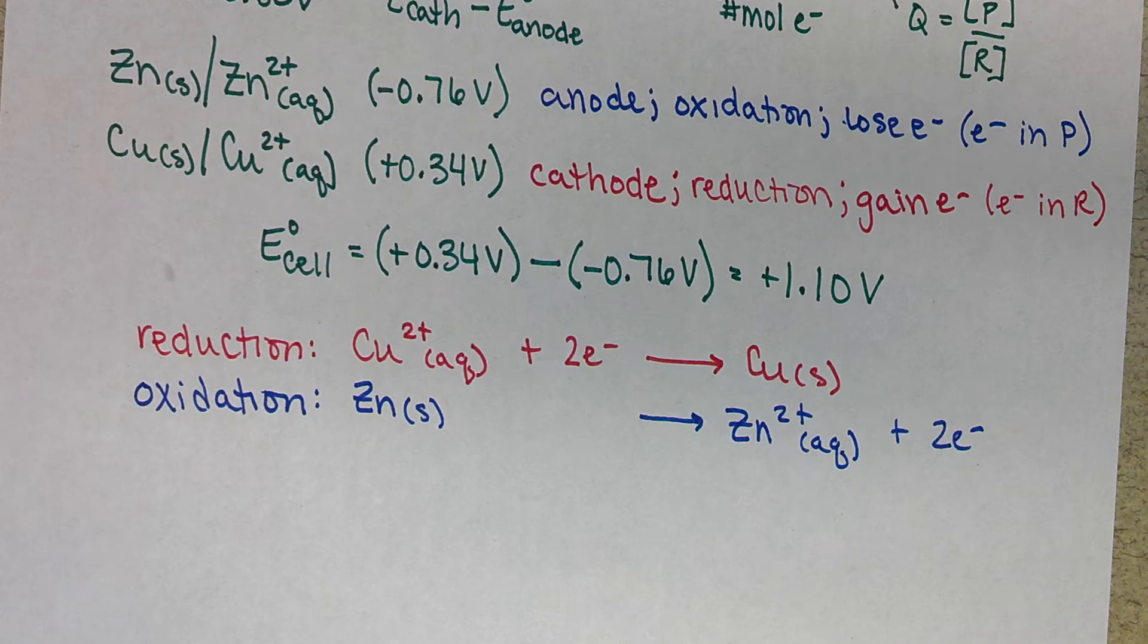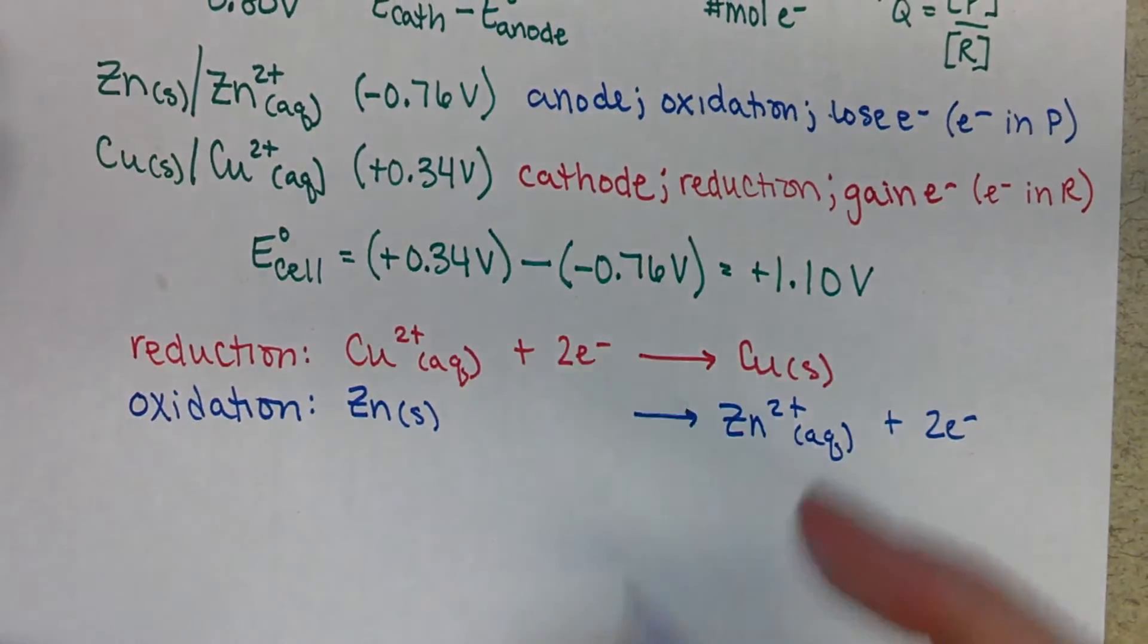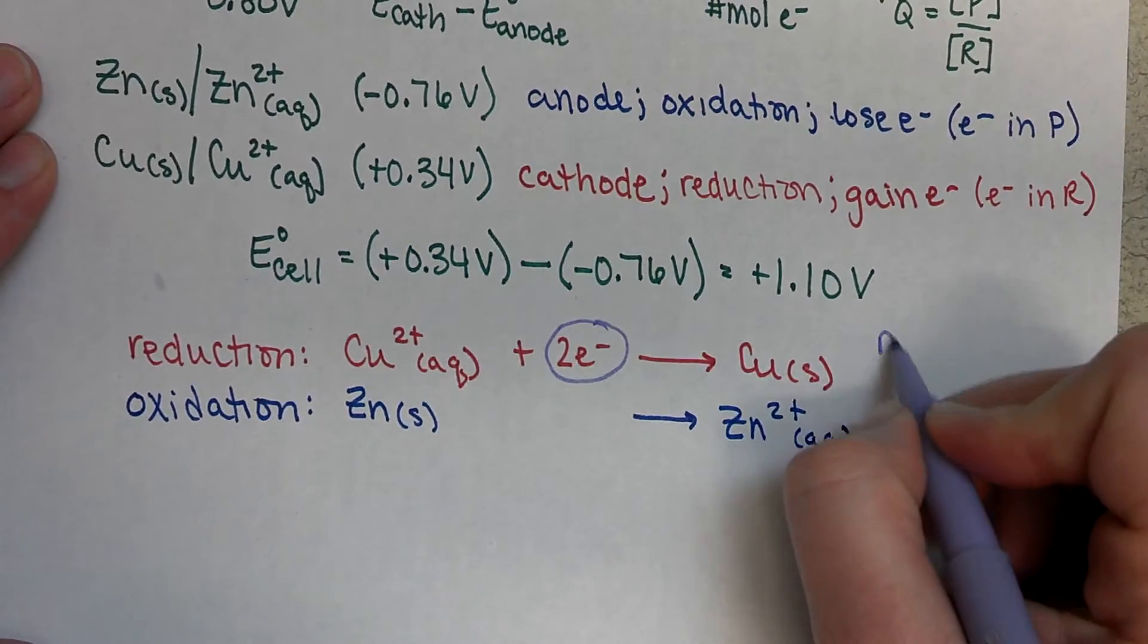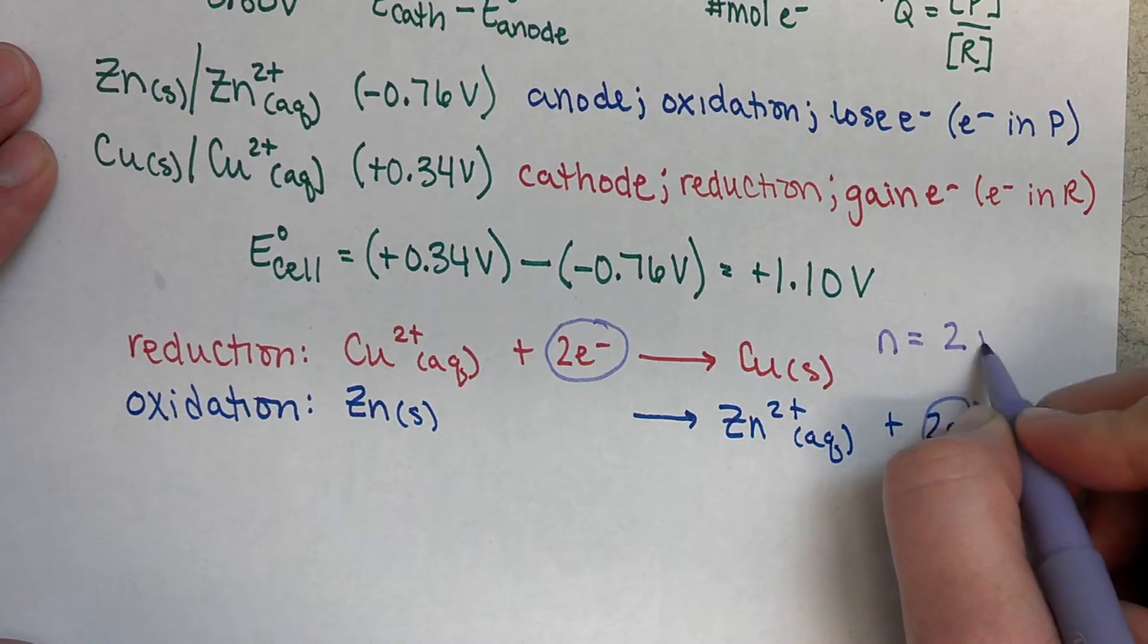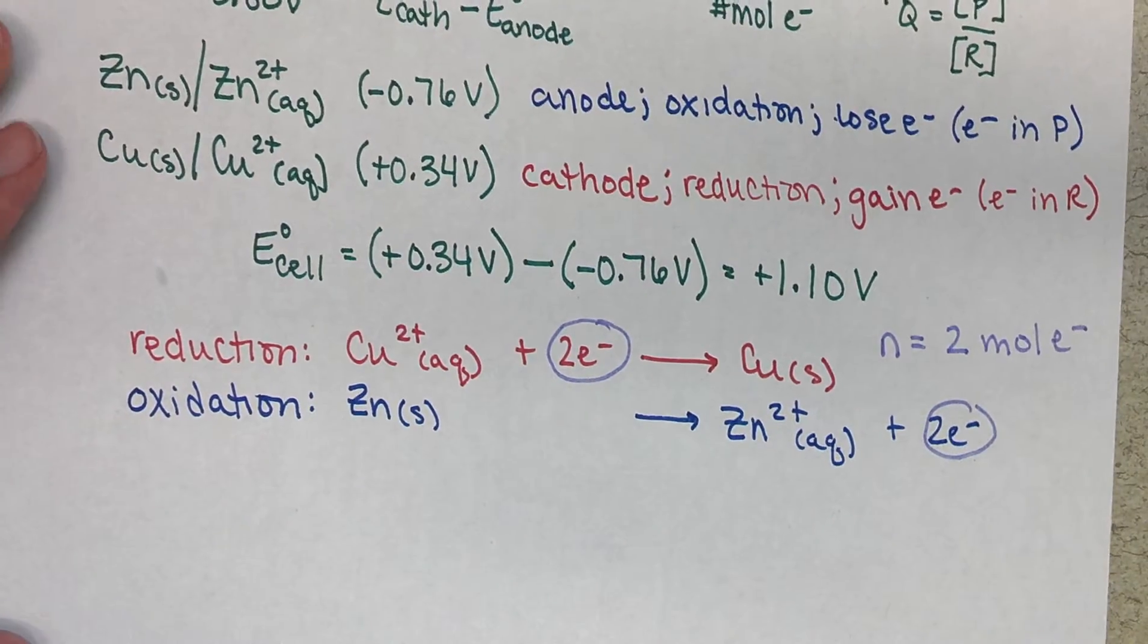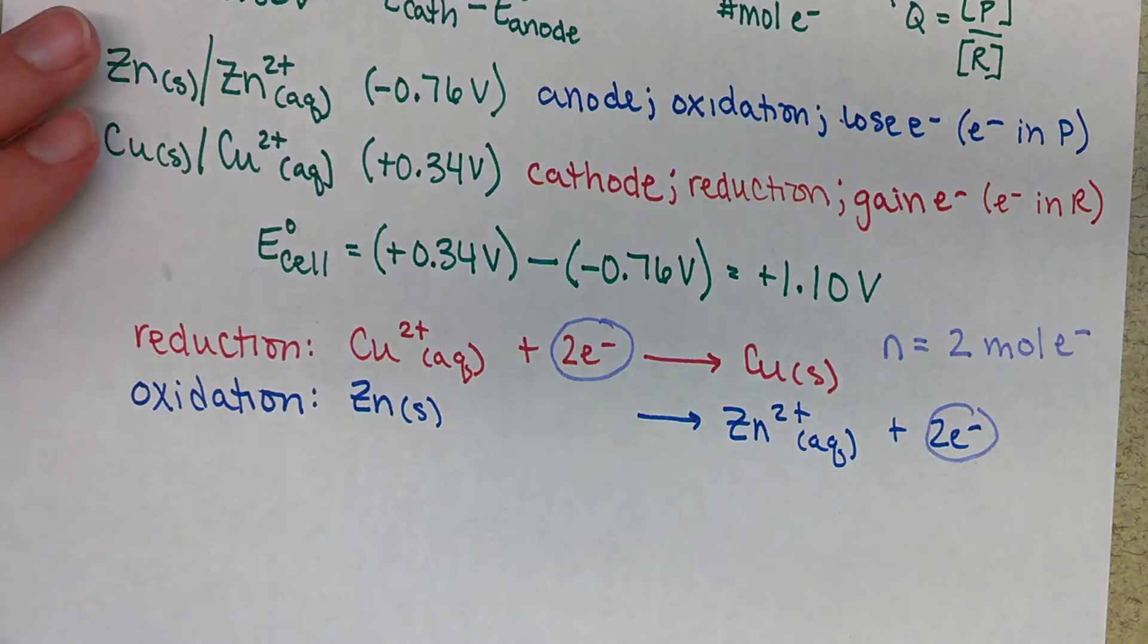Now what we can see here is we have the same number of electrons that are gained and that we're lost. So we'll be able to then determine that our N is equal to two moles of electrons. And we have two moles of electrons that are involved in this reaction. So that gives us our N value.